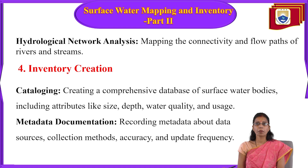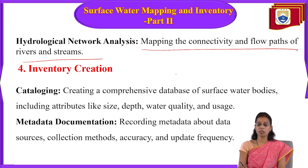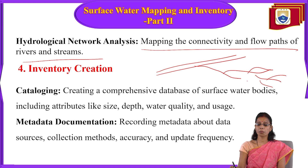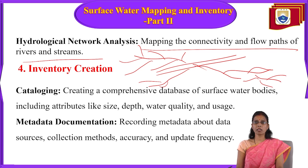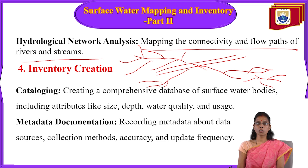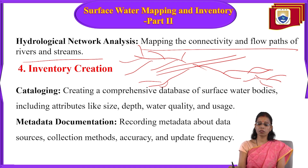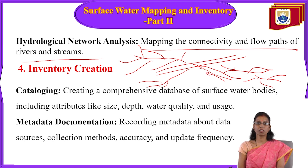Hydrologic network analysis involves mapping the connectivity and flow paths of rivers and streams. For example, a main river channel may have different streams connecting to it, flowing and merging into the same channel. By analyzing the network and connectivity of these flow paths, we can identify the slope of an area, the direction water is flowing, and use this for surface water mapping.